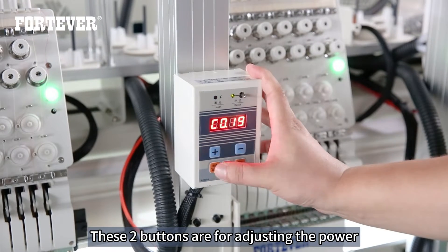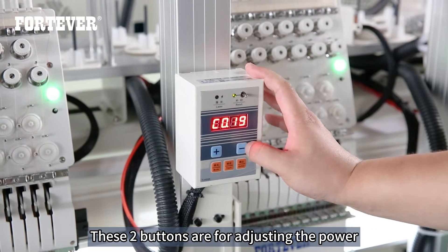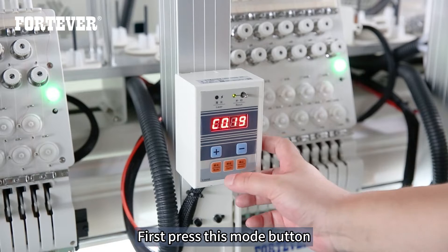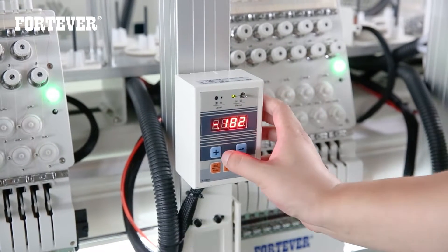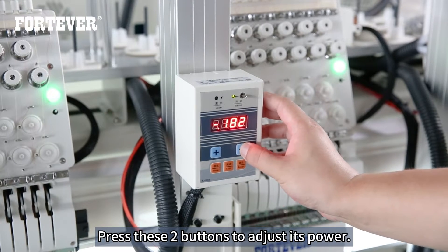These two buttons are for adjusting the power. First press this mode button. The power number will appear here. Press these two buttons to adjust its power.